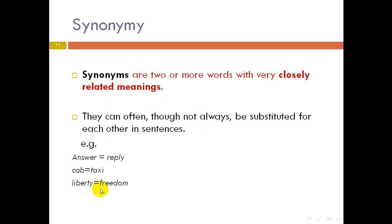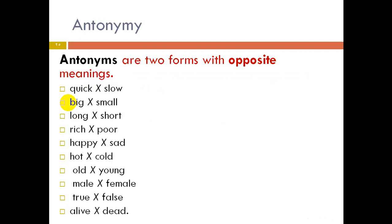Antonymy: antonyms are two forms or words with opposite meanings. Examples: quick/slow, big/small, long/short, rich/poor, happy/sad, hot/cool, old/young, male/female, true/false, alive/dead.